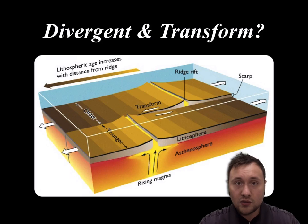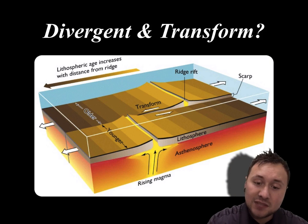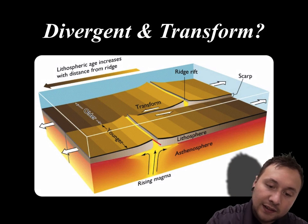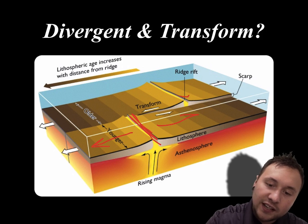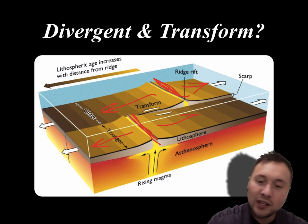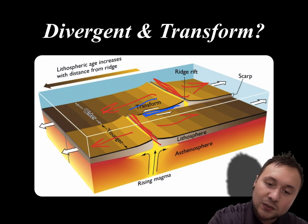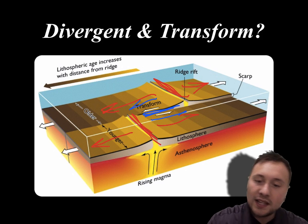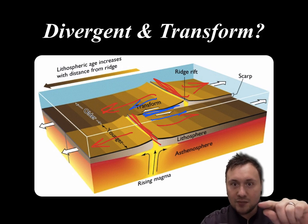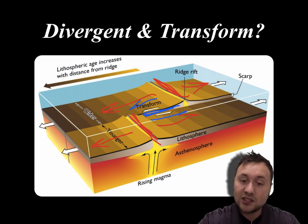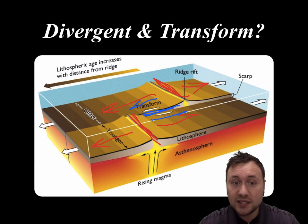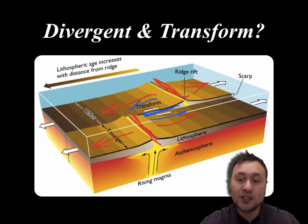You can have divergent and transform boundaries happening at the same time. In the middle you've got divergent boundaries because the plates are pulling apart. But right in the middle you can also see a transform boundary — because this part is going one way and this part is going the other way. So you've got two different types of plate boundaries because the crust is moving in different directions.